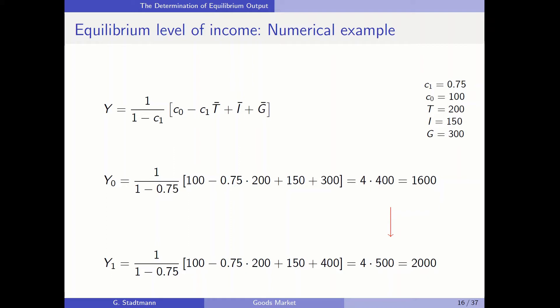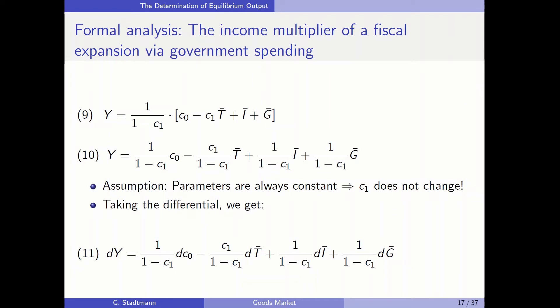Let's check how we can derive this result. We start with the equilibrium income level in equation number 9, and then we try to get rid of the brackets here and multiply through by this fraction. Afterwards we have to compute the total differential of equation 10. We assume here that the parameters are always constant — therefore c1 does not change.